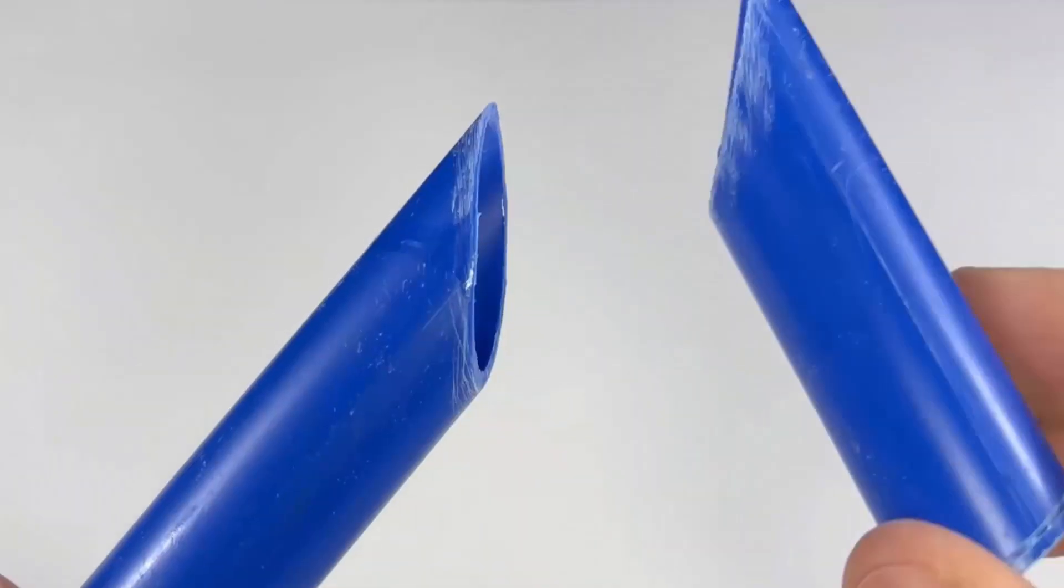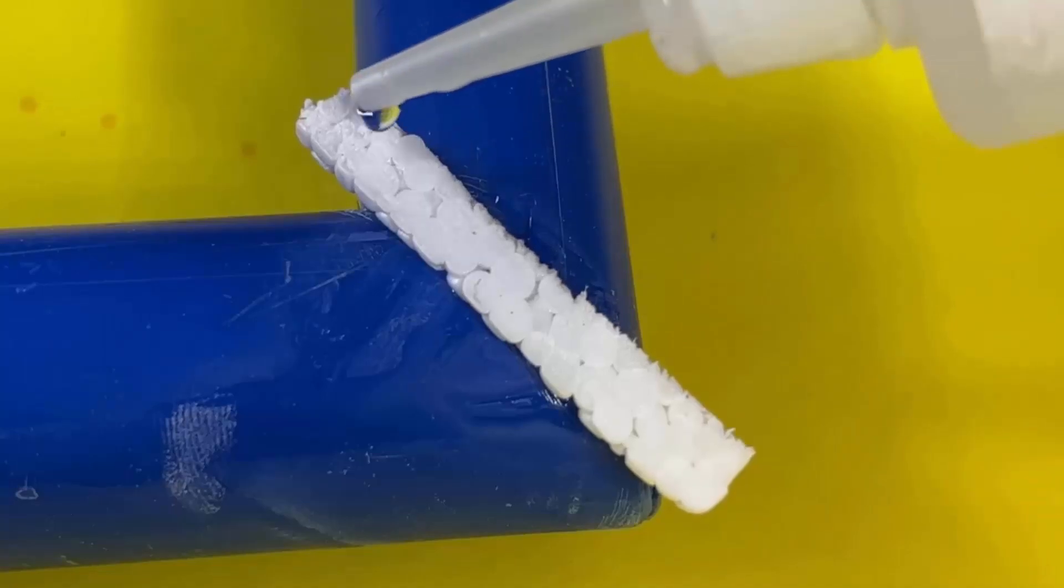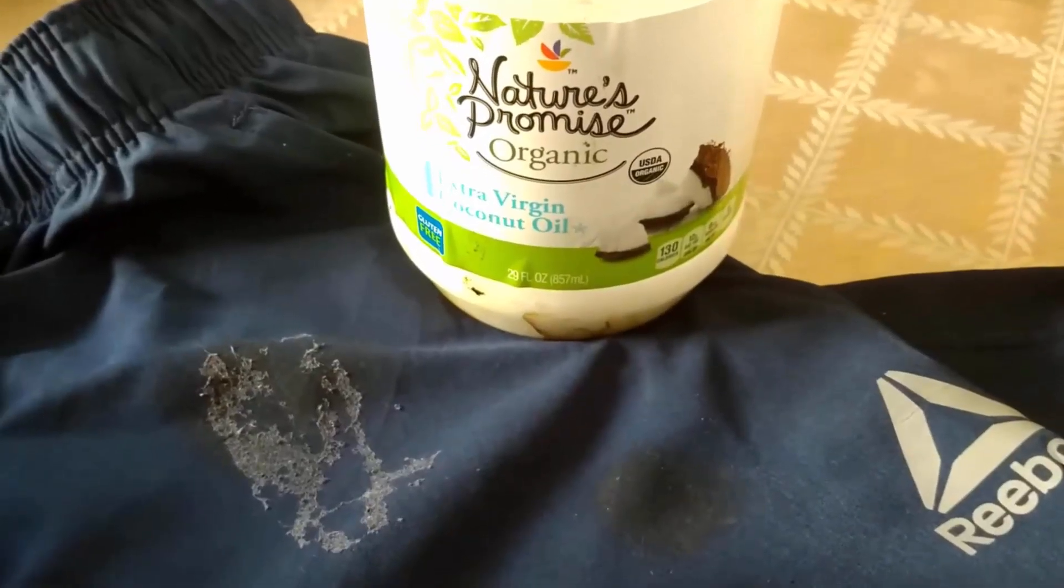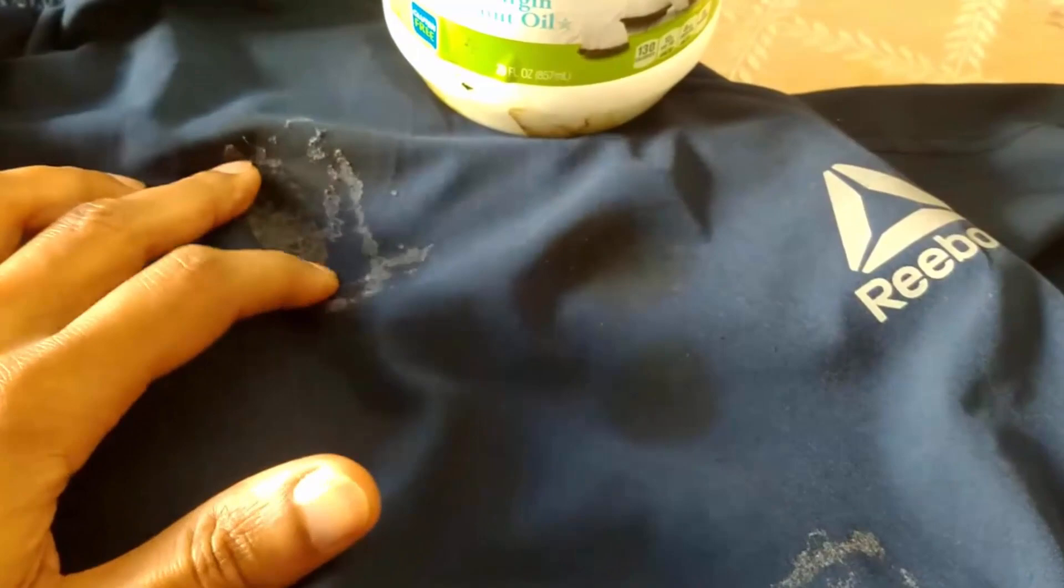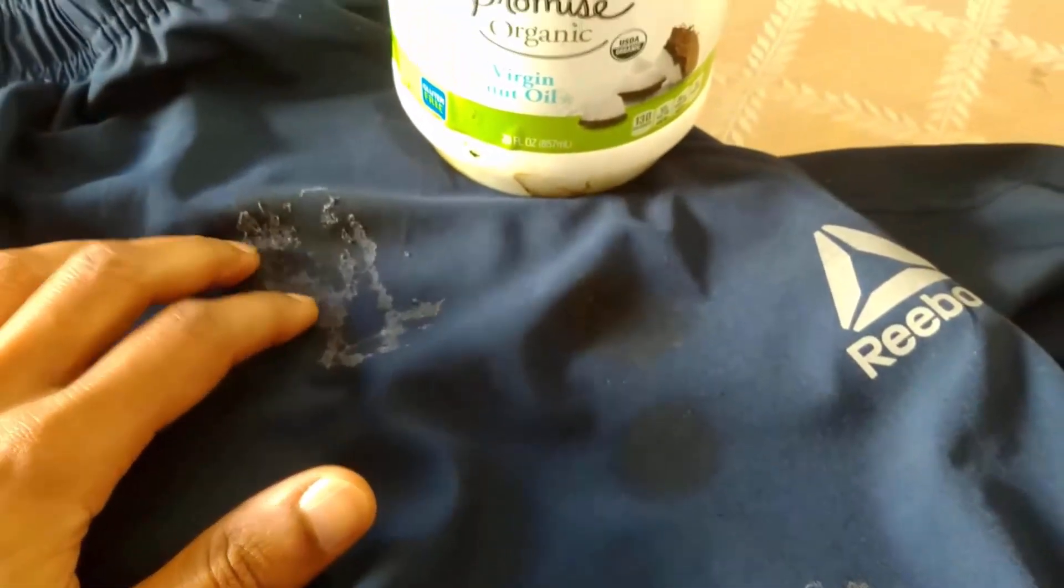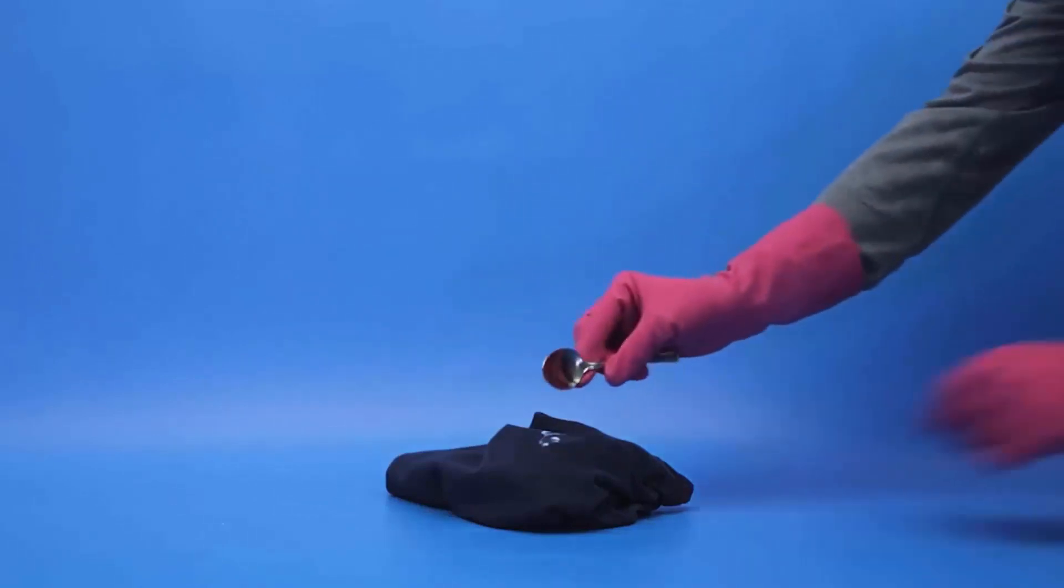Super glue is a strong adhesive that can be incredibly useful when you need to stick things together. However, accidents happen and sometimes super glue can end up on your clothes. Trying to remove super glue from clothing can be a challenging task, but it is possible with the right approach.